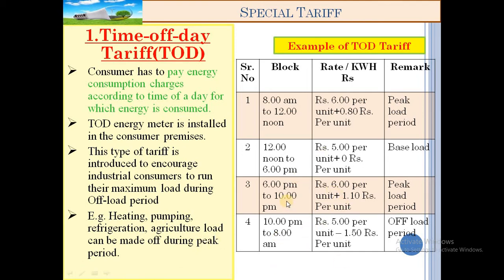During the evening (6 PM to 10 PM), sunlight is no longer sufficient, so tube lights and electric lamps are switched on. Street lights, park lights, and corridor lighting come on. Commercial load is still on — showrooms, complexes. At the end of the day, residential load increases: TV, mixer, grinder, washing machine and other appliances are switched on. Both residential and commercial loads surge simultaneously.